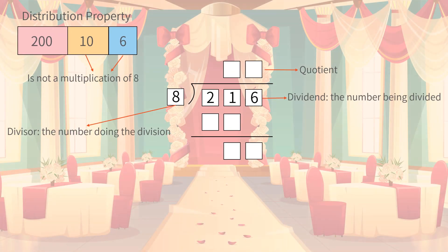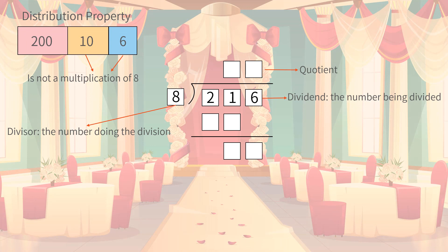Remember, do division when you find the first number that is able to be divided. Here, we find 2 is smaller than 8, so we do 21 divided by 8. Let's estimate the first digit in the quotient. We find 16 is 8 times 2, and 24 is 8 times 3.